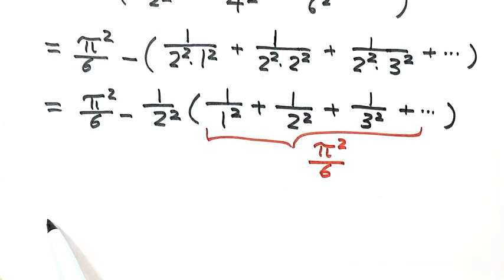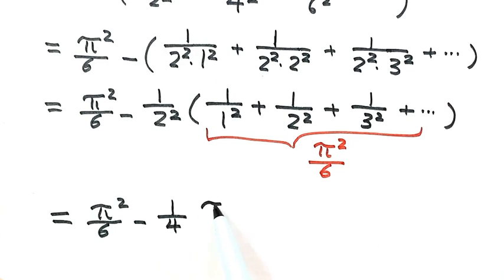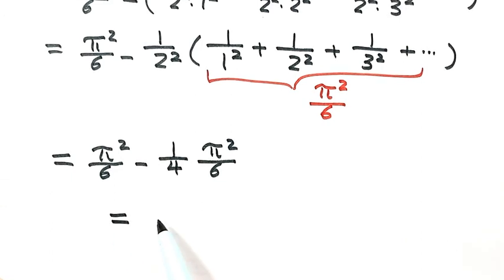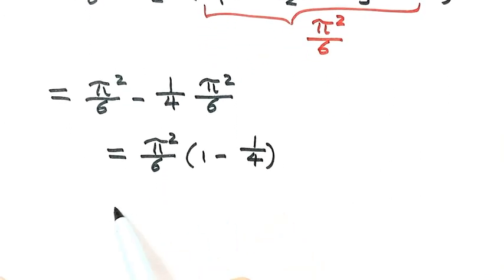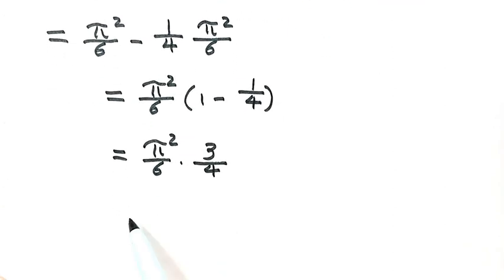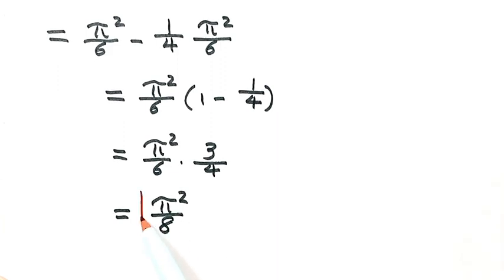So the even part equals (1/4) × (π²/6). Therefore our target sum equals π²/6 minus (1/4)(π²/6), which factors as π²/6 × (1 − 1/4) = π²/6 × 3/4. Simplifying gives π²/8. So π²/8 is the answer to this question.